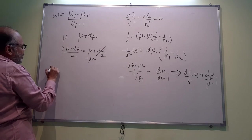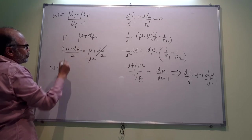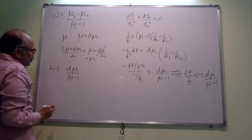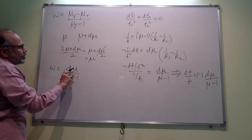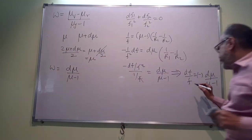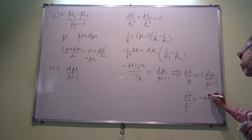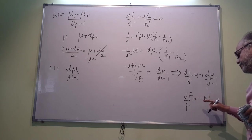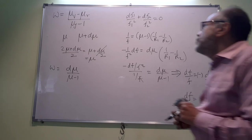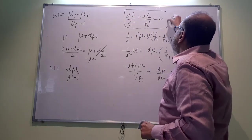So I can write ω as the difference in the two extremes. The difference of these two is dμ and the mean is μ-1. So ω is nothing but dμ/(μ-1). So we can conclude here that df/f = -ω. So df/f is negative of the dispersal power.